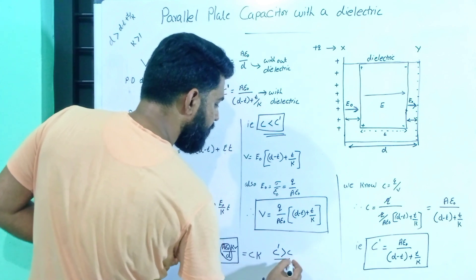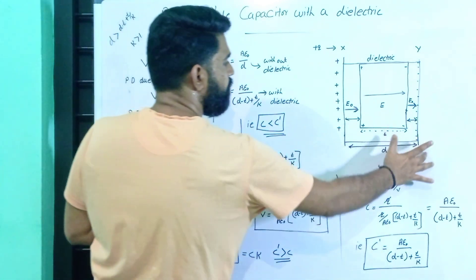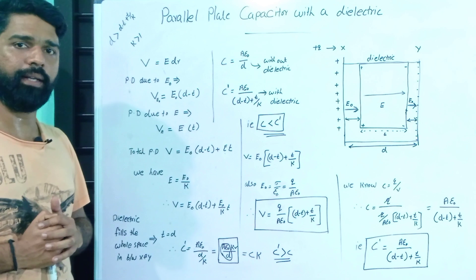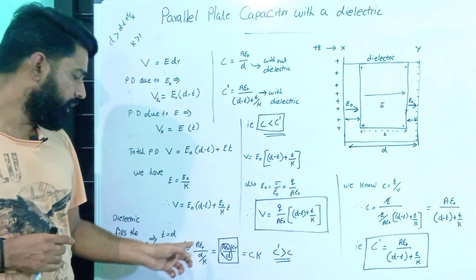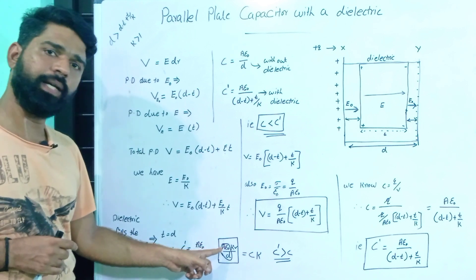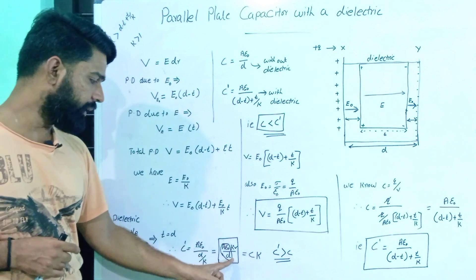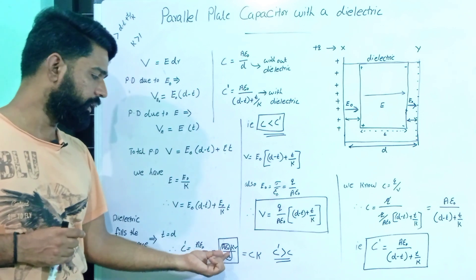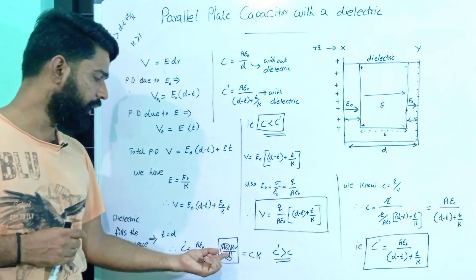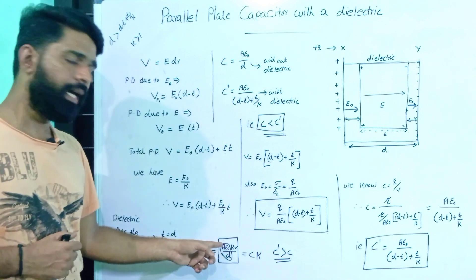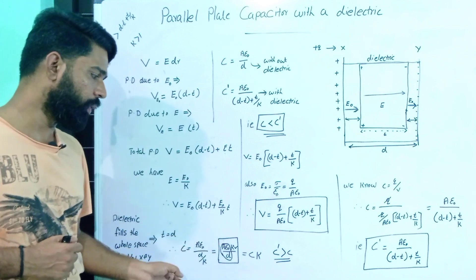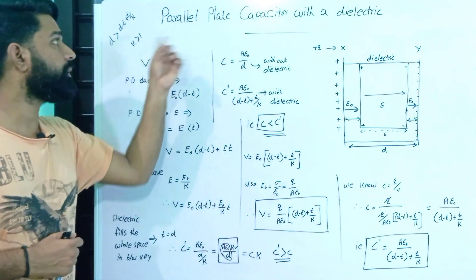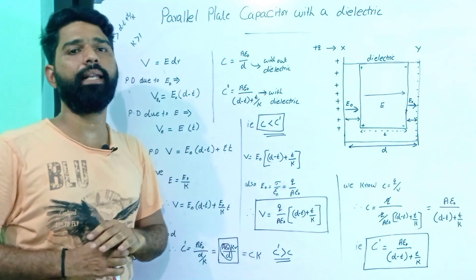C prime is greater than C. The capacitance of the parallel plate capacitor with dielectric depends on: the area A, the dielectric constant K, and the distance d between the plates. To increase capacitance, we must maximize area and dielectric constant, and minimize the distance between the plates.